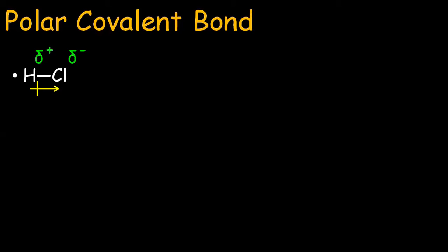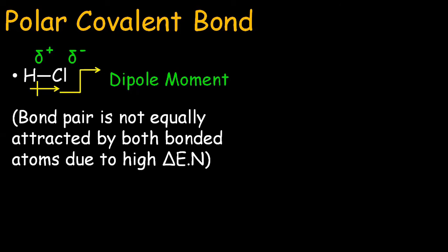The link is also given in the description box. How much the bond is polar is calculated by dipole moment. This is because the bond pair is not equally attracted by both bonded atoms due to high difference of electronegativity.